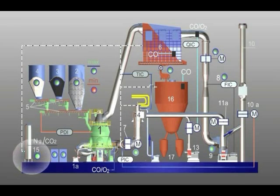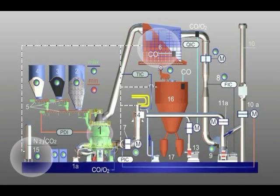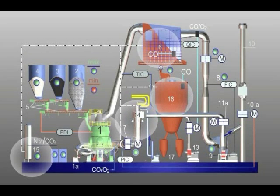Inert gas is applied to the following units: Position 6, filter. Position 1, mill. Position 14, hot gas generator. And position 16, dust hopper.